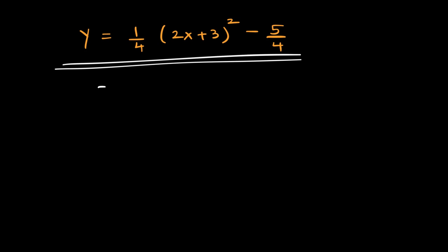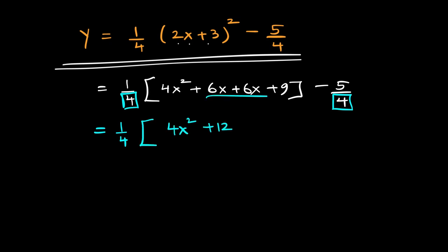Let's do one thing. Let's simplify this equation further. So, this is 1/4 and this is (2x plus 3) whole square. That is 4x square plus 6x plus 6x plus 9 and this is minus 5 over 4. Let's take this 4 common out. So, we have 1/4 and (4x square plus 12x plus 9 minus 5 that is plus 4). And let's simplify it by dividing each term by 4. So, what do we get? 4 over 4 is x square, 12 over 4 is 3x, 4 over 4 is 1 and now we have the same equation of the curve as before.